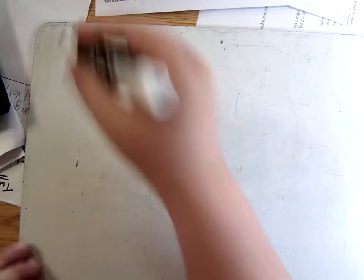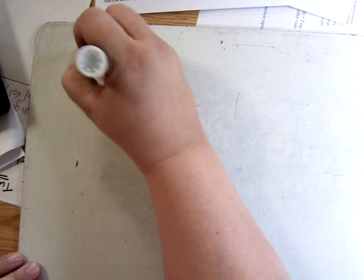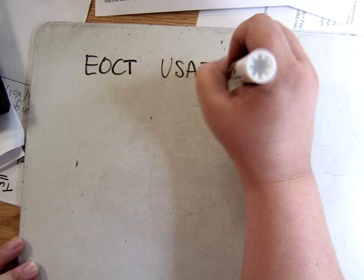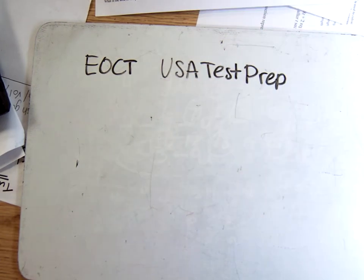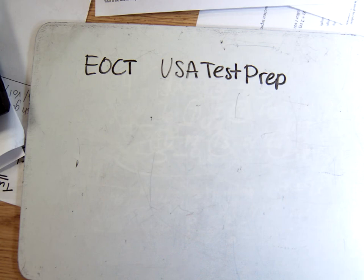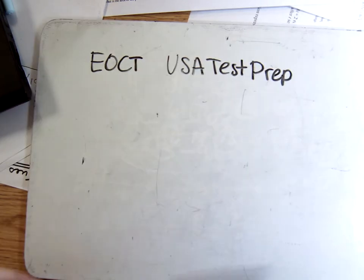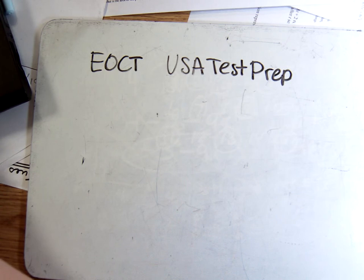I told you I would do a key for your EOCT online USA test prep homework from Monday. The problem is I didn't realize it was completely giving new questions every single time, and probably to every single person who did that 10-problem assignment. I've opened it like three different times and gotten different questions each time. So I'm just going to do a sampling of the problems I'm seeing, because I know it's the same types of problems, and this will hopefully answer some of the questions you had.